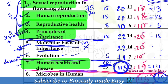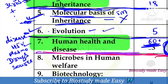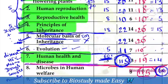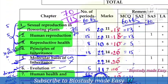The next important topics are: HIV virus replication, plasmodium life cycle, drug and alcohol abuse, prevention methods — that is the last topic. This covers the human health and diseases chapter.